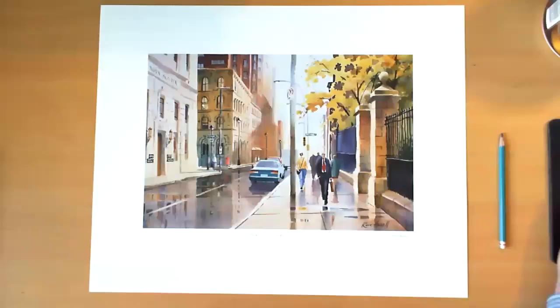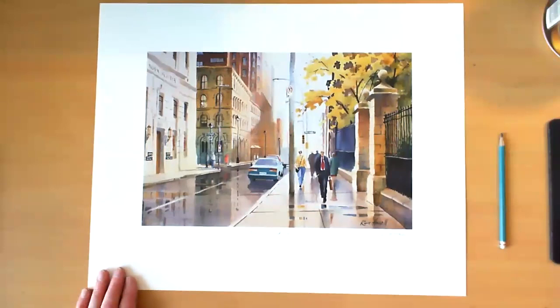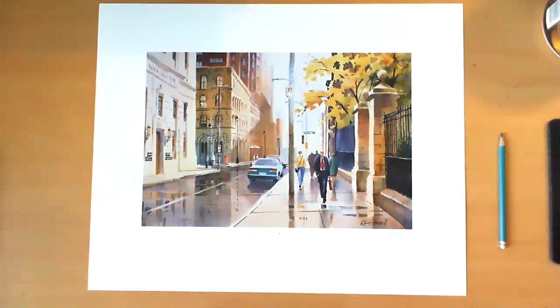This workshop is going to look at streetscapes in one-point perspective, which will be the first session, and two-point perspective, which will be the second session. I have in front of me a reproduction of a painting that I did some years ago. We won't be doing this particular painting, but I just want to point out a few things that we will be discussing in the workshop.